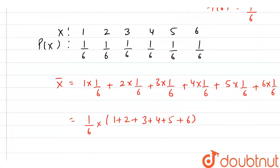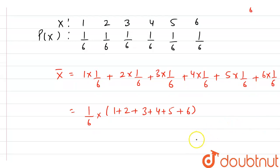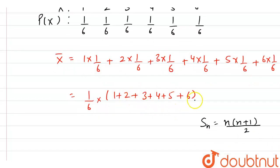And we know that the sum of n natural numbers, let's represent it by S_n, is equal to n into n plus 1 by 2. So here as we are having total of 6 natural numbers, so we can write 6 into 6 plus 1 that is 7 by 2.